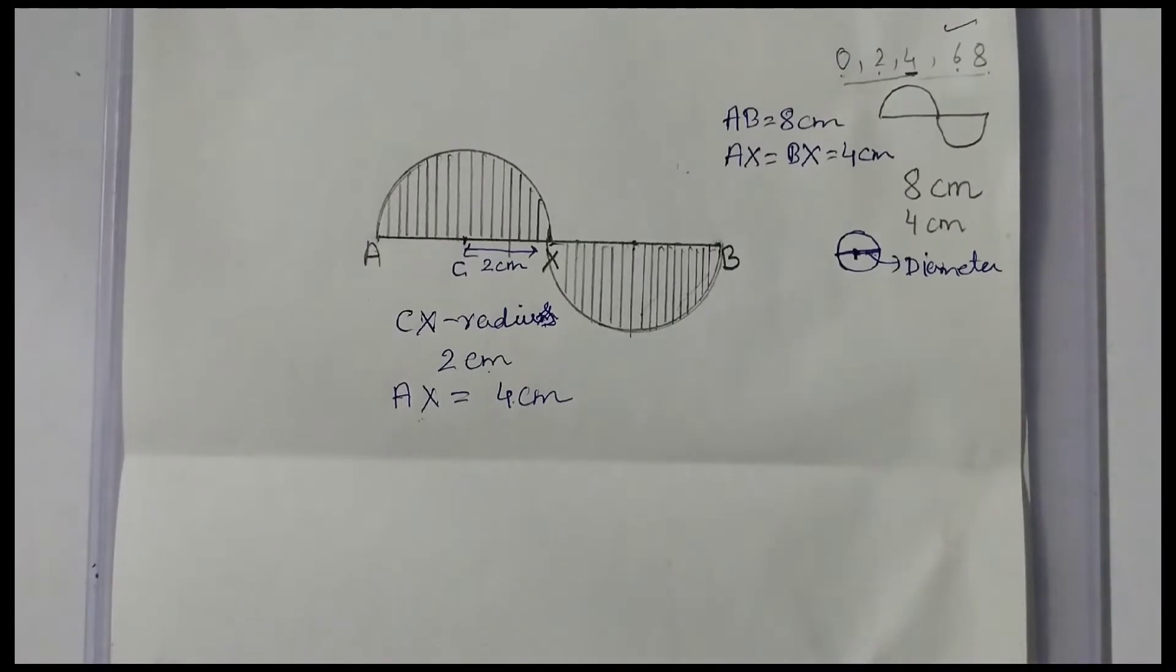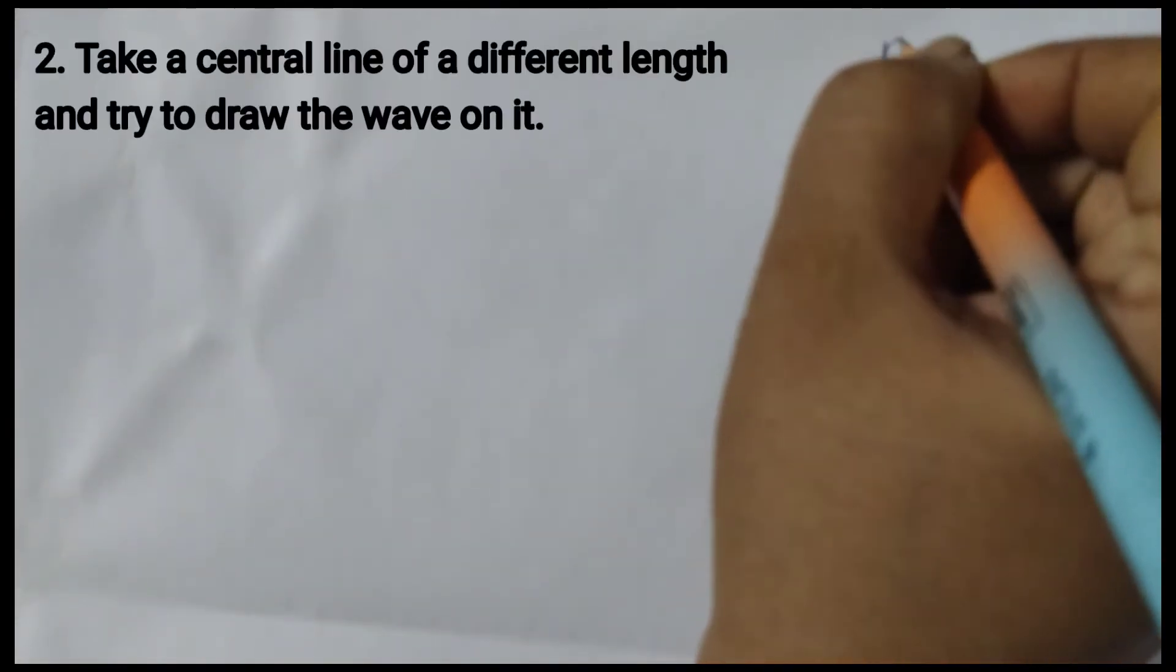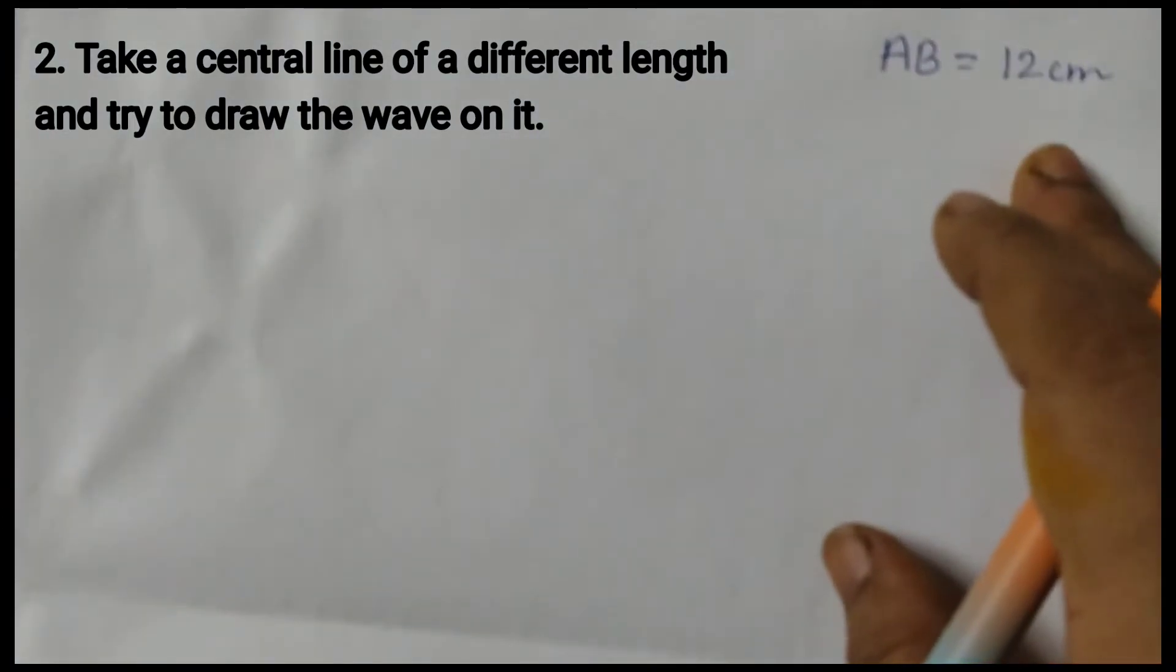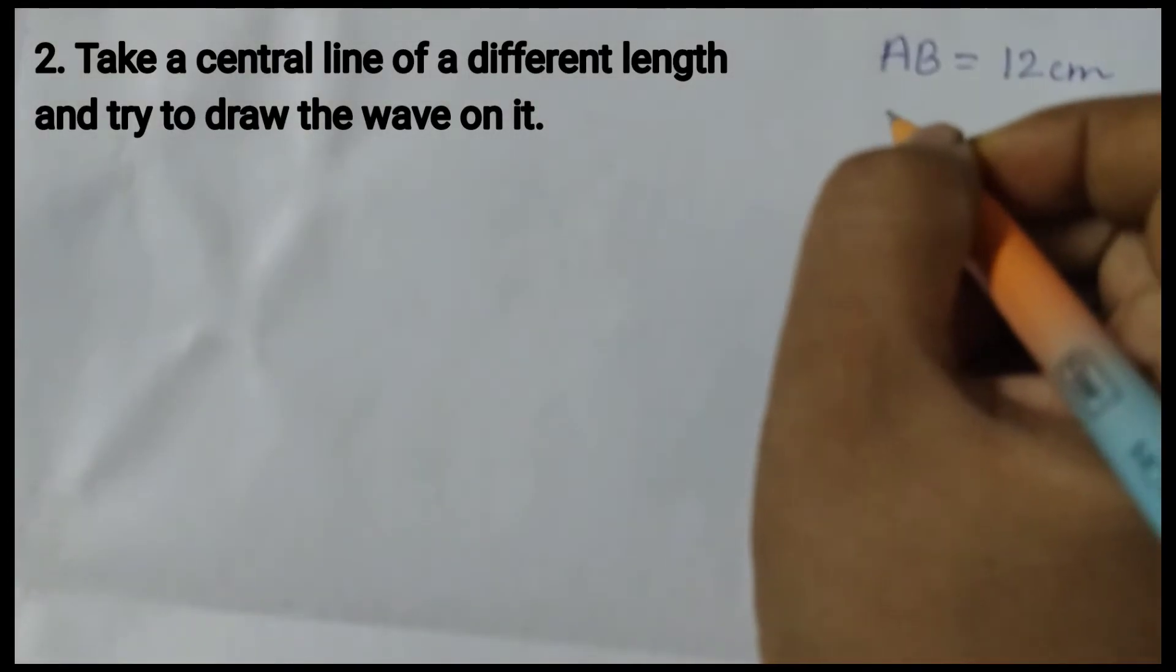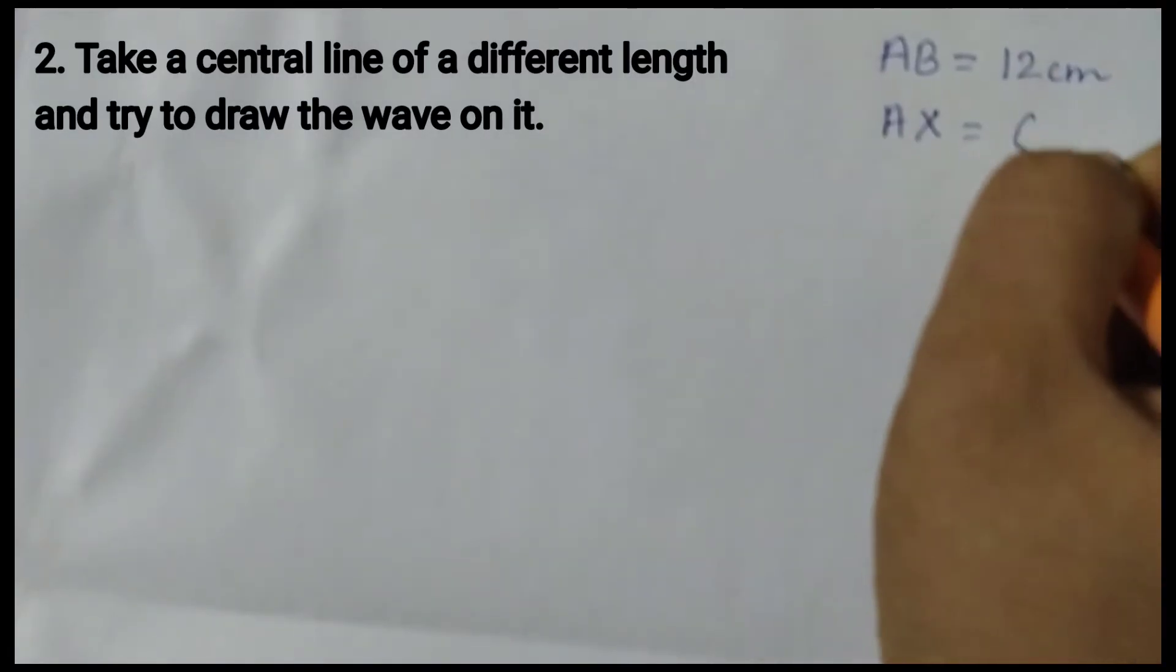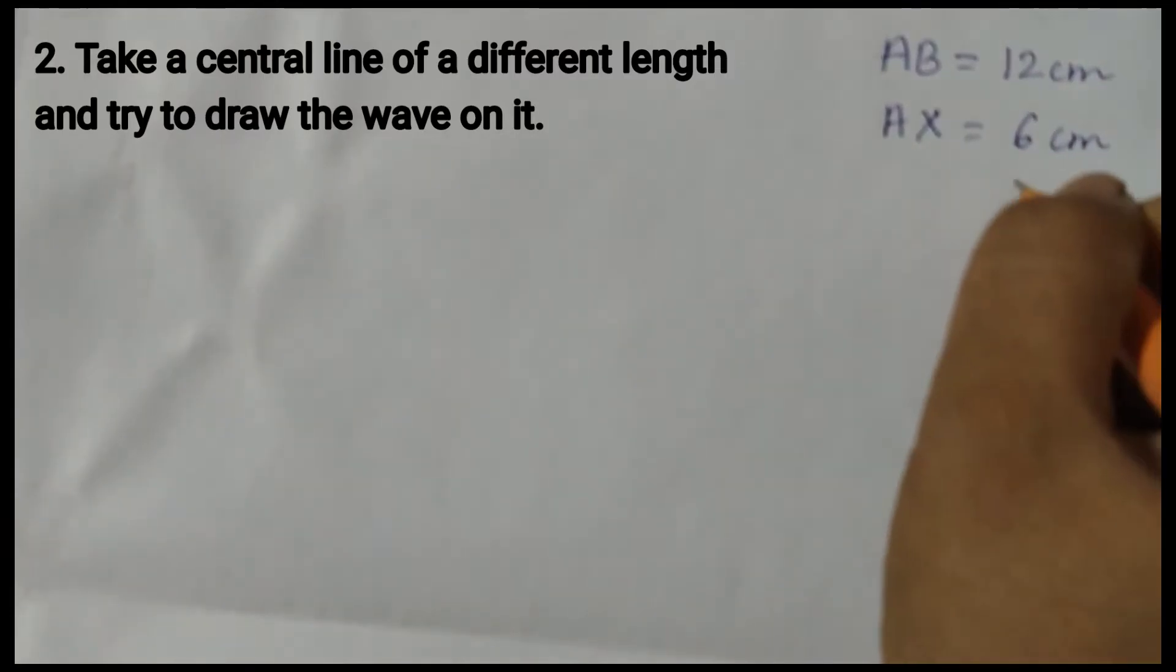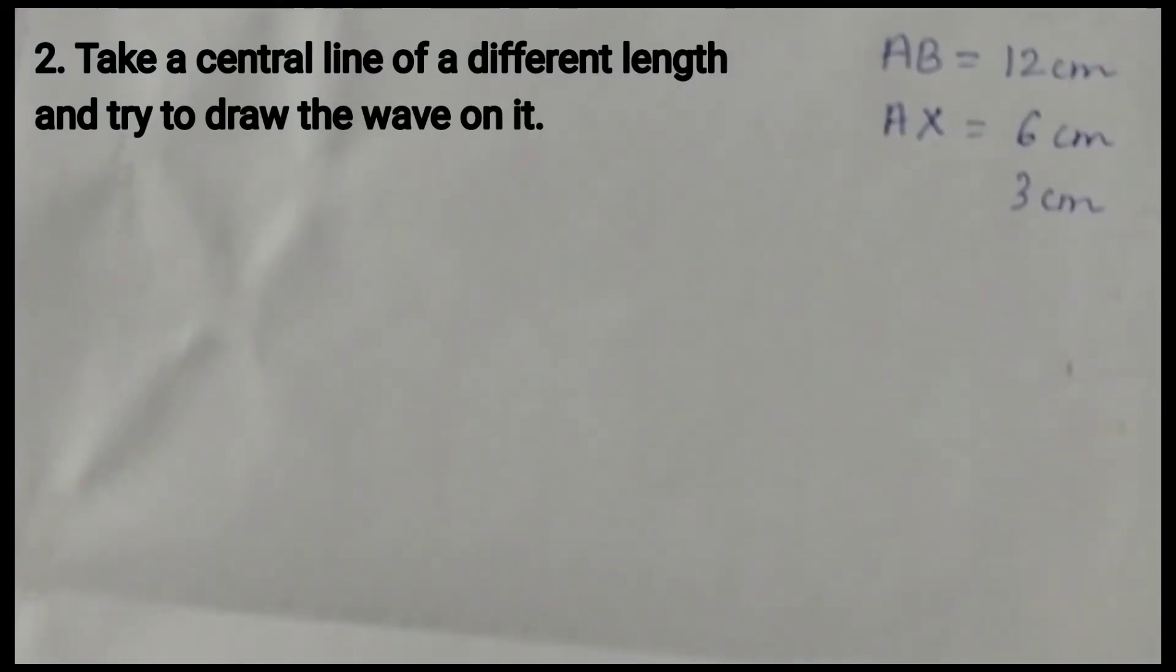The second question is take a central line of a different length and try to draw the wave on it. So we are going to draw a different wave with a different measurement. First what I will do here is I will take AB as 12 centimeters, which is the central line and half of AB is 6 centimeter. So AX in this case will be 6 centimeter and half of 6 is 3 centimeters. So if you remember these points, these measurements, it will be easy for you to draw the wavy wave with a different length.